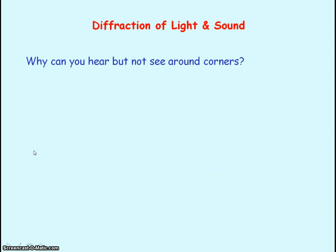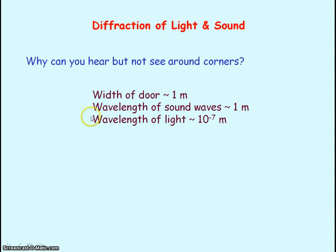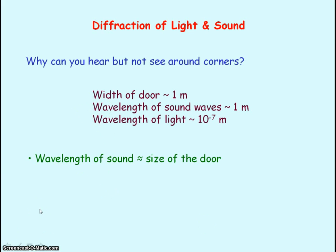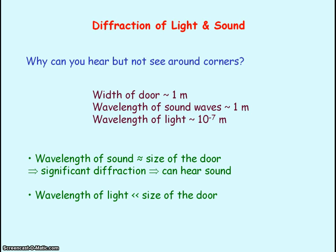So how can you hear but not see around corners? It's all to do with diffraction of sound and light. A typical width of a door is approximately one meter. A typical wavelength of sound waves is about one meter, however the wavelength of light is around 10 to the minus seven meters. The wavelength of sound is approximately equal to the size of the door, so we get a significant amount of diffraction — that's why we can hear sound beyond the corner of the door. However, the wavelength of light is much much less than the size of the door, so we get no diffraction of light, and that's why we cannot see around the corner.